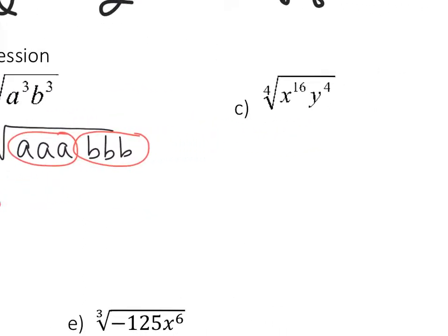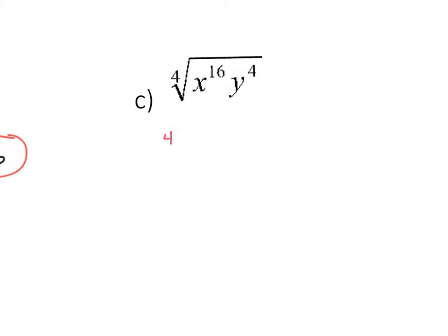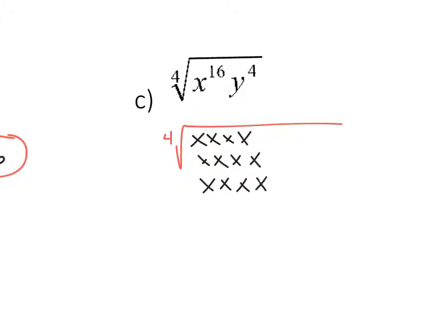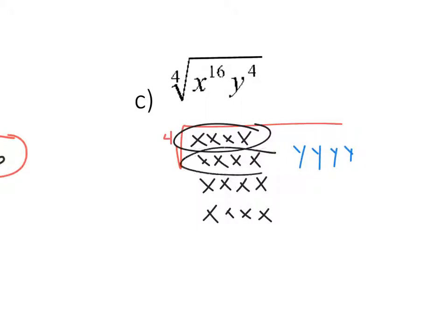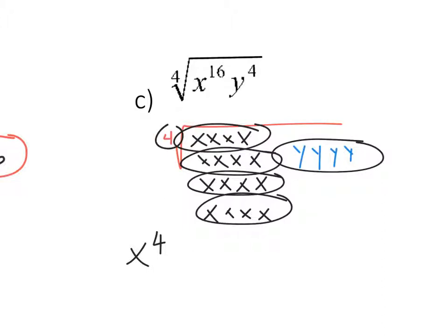Letter C — the fourth root of x to the 16th y to the 4th. I write out 16 x's and take them out in groups of 4, giving x to the 4th, and just one group of 4 y's. That's a lot to write out 16 x's, so the fastest way is the method I did previously: do 16 divided by 4, and you get 4. And then 4 divided by 4 is 1, so that power is 1.